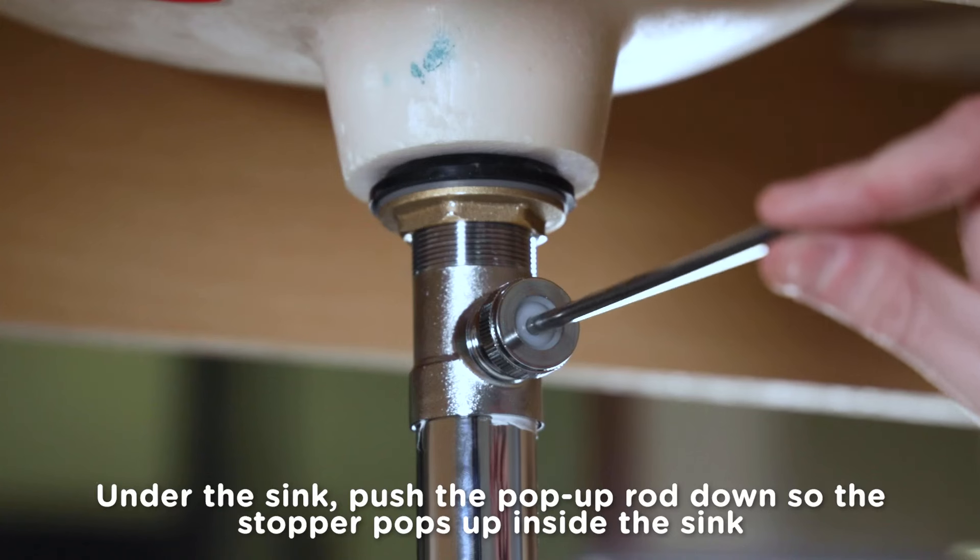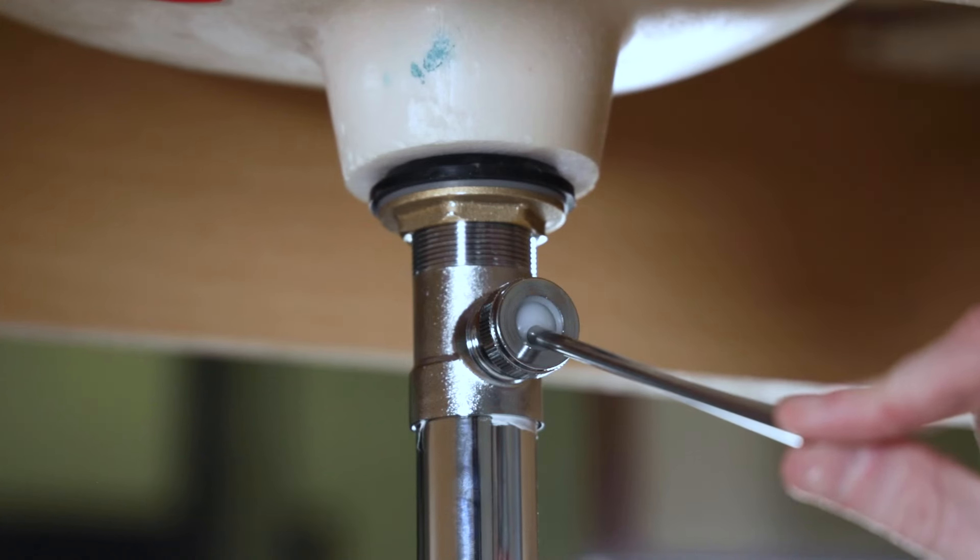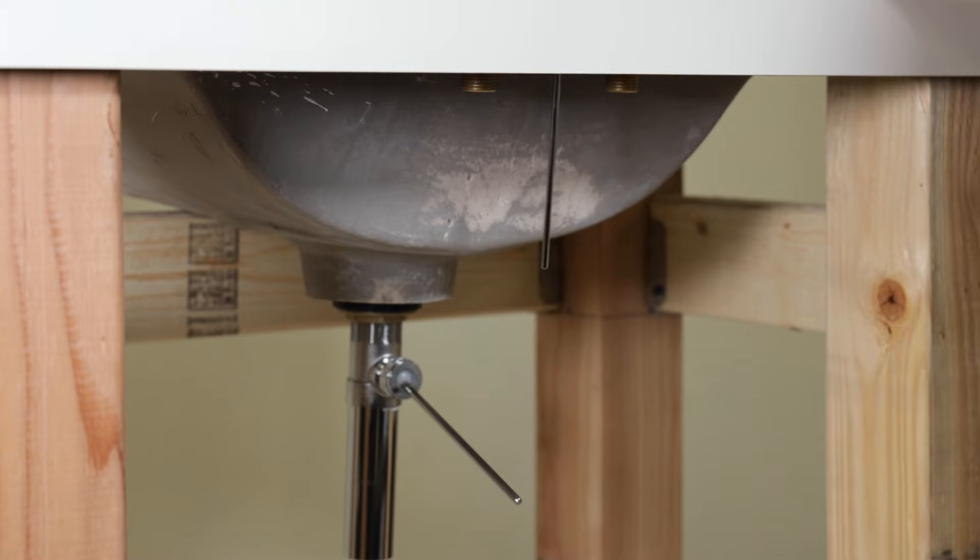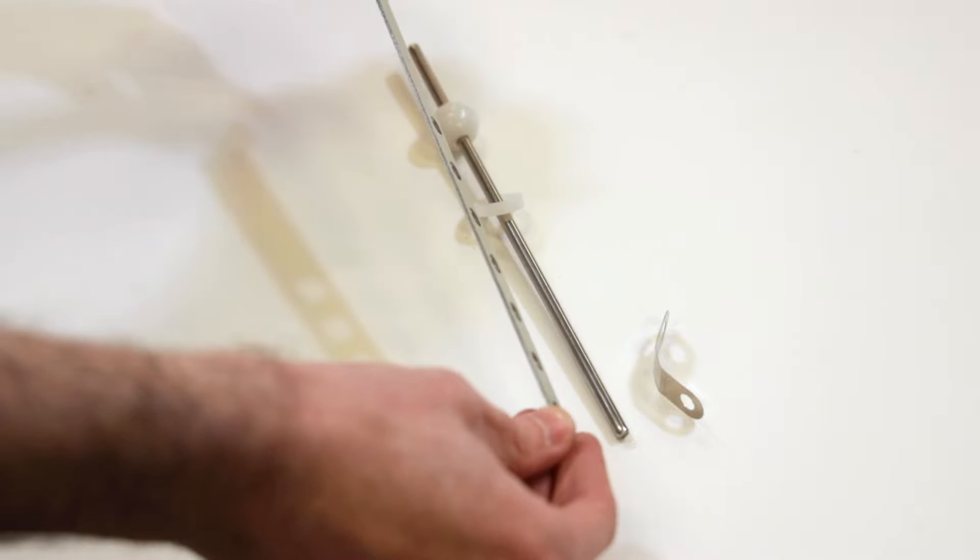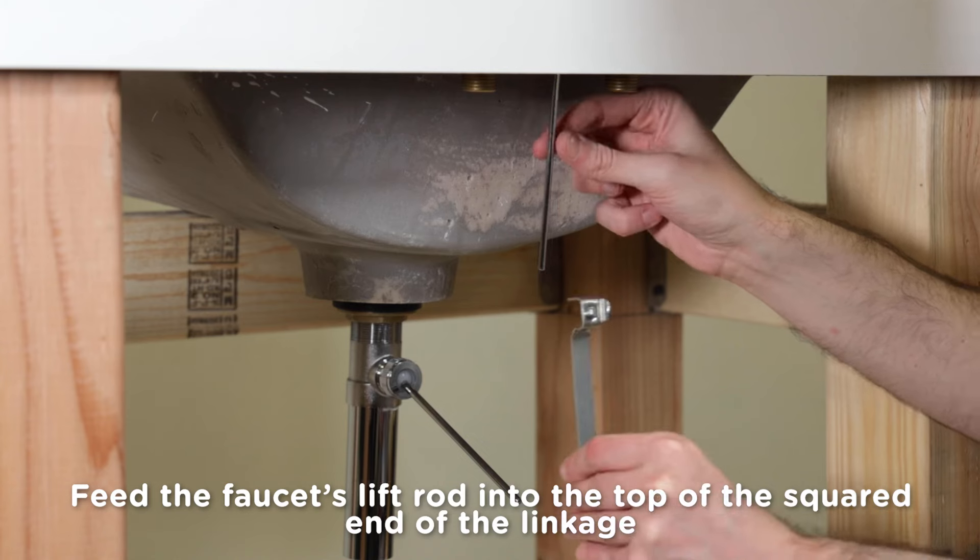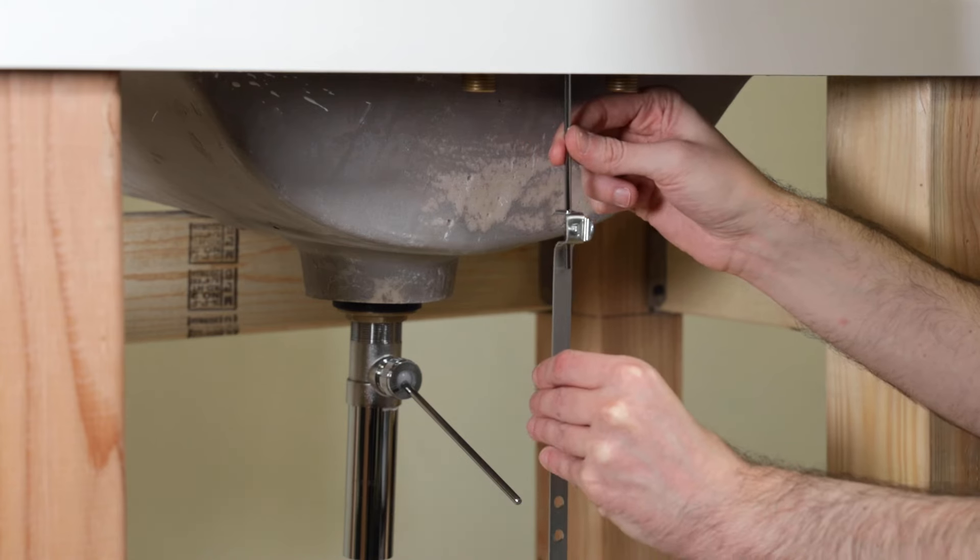The last step to this masterpiece is to link the lift rod with the pop-up rod to make the whole thing work. Under the sink, push the pop-up rod down so the stopper pops up inside the sink. Insert the faucet's lift rod down through the faucet so you can see the end under the sink. Now it's just a matter of connecting these two with the lift rod linkage. In the parts bag, you'll see a flat metal strap with the wing nut on the end. That's the lift rod linkage.